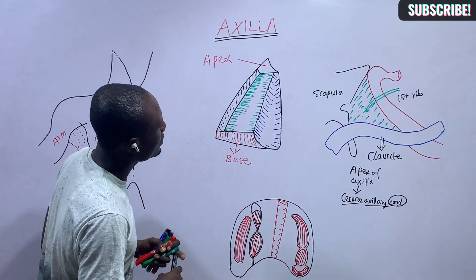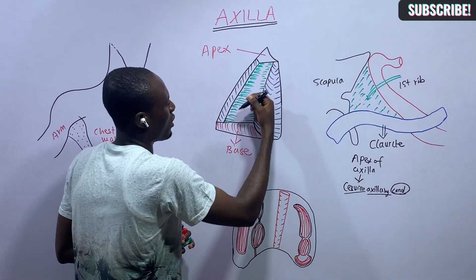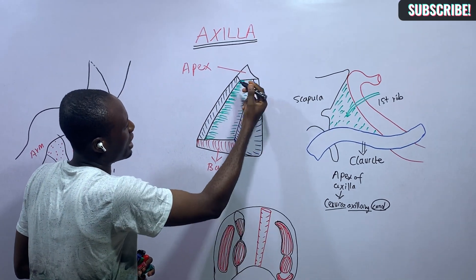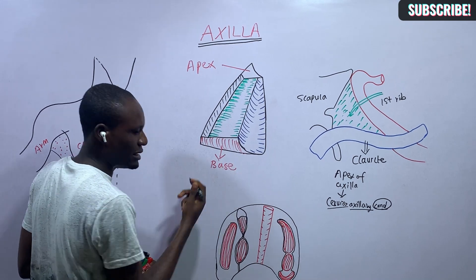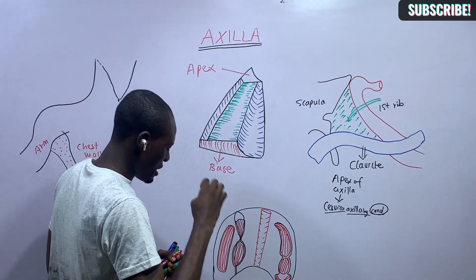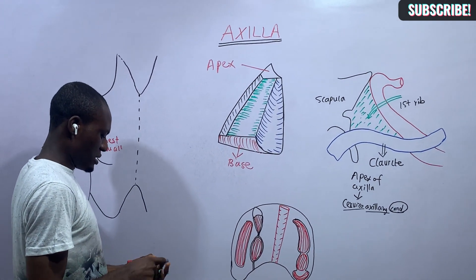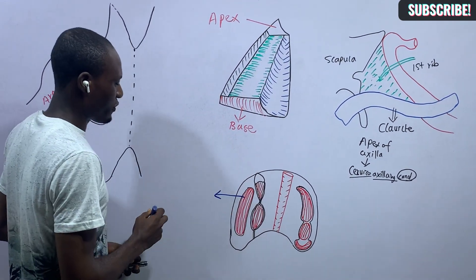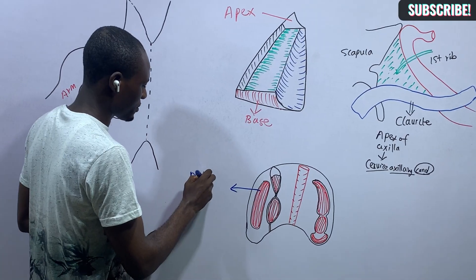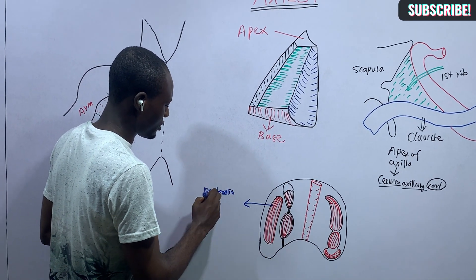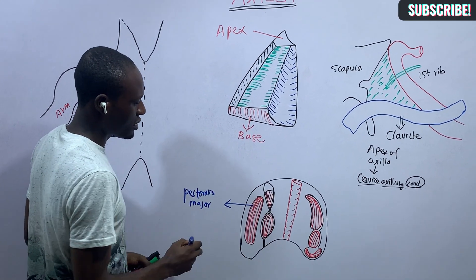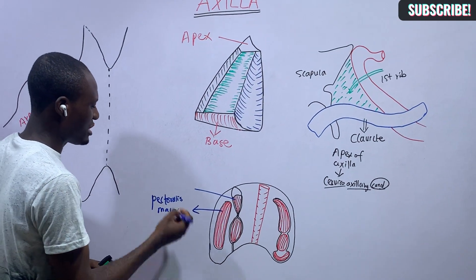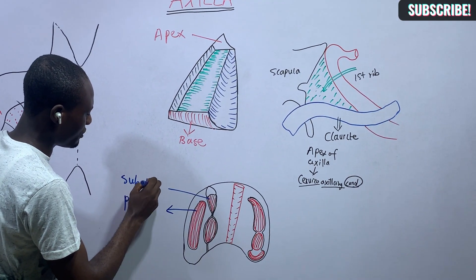The posterior wall of the axilla is seen from behind, and we can identify the medial wall, lateral wall, and base. The muscles forming the anterior wall of the axilla include the pectoralis major in front, and above and behind it, the subclavius muscle.